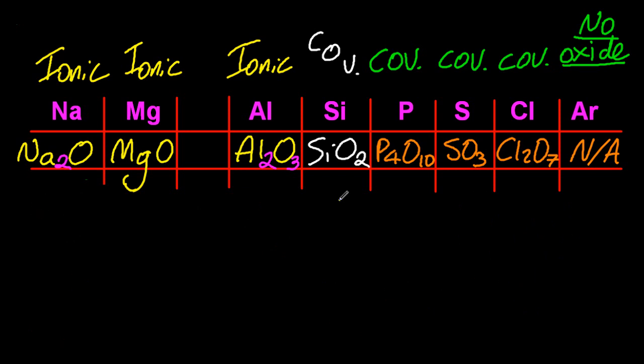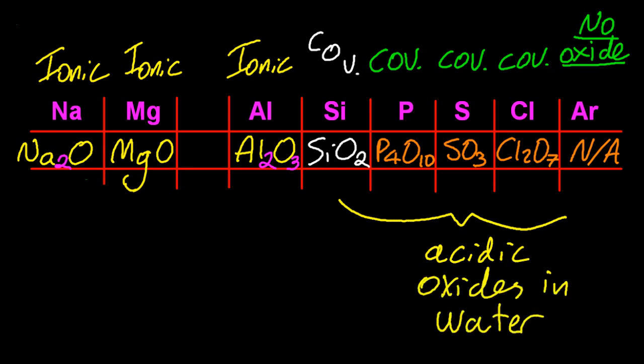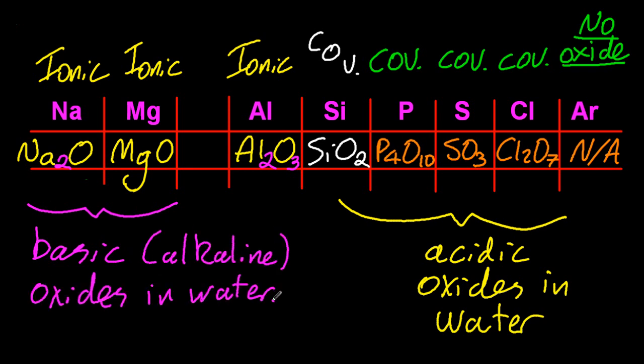So that allows you to remember that the covalent, or the non-metal oxides, are acidic when you put them in water, because the sulfur one makes acid rain. And the ionic ones, conversely, are basic oxides. That also makes sense. Alkali metals, they're alkali oxides in water.